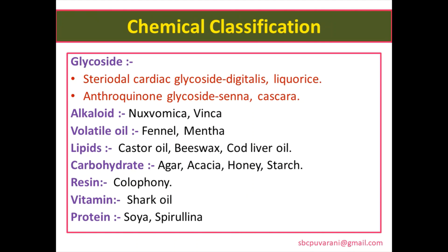Chemical classification: crude drugs are classified according to their chemical nature. Examples include glycosides, which are further classified into steroidal cardiac glycosides — digitalis and lycoris; anthraquinone glycosides — senna and cascara. Alkaloids: nux vomica. Volatile oils: fennel, mentha. Carbohydrates: agar, acacia. Resins: colophony. Vitamins: shark liver oil and cod liver oil.